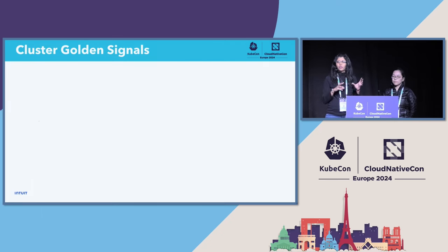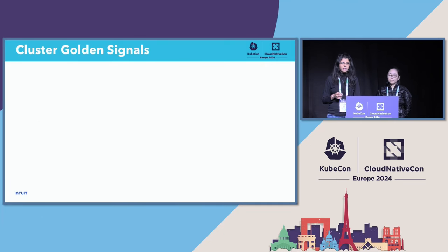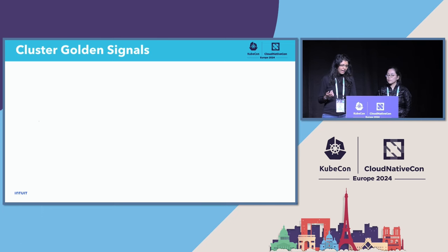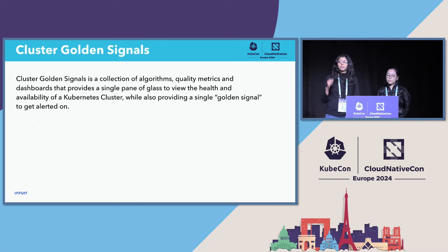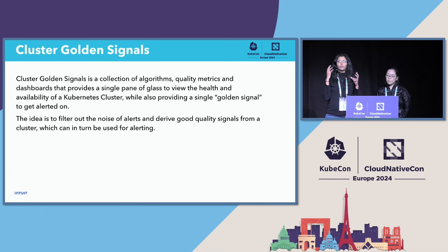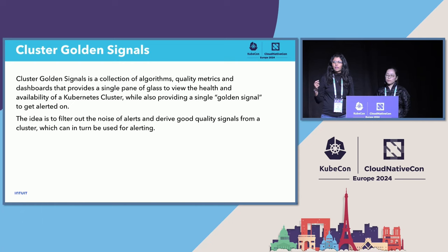In order to solve the first part of the problem and reduce alert fatigue from a sea of alerts, we've defined what are called Cluster Golden Signals. This is a philosophy derived from service golden signals, where you have four pillars across which you can measure the health of a service. Similarly, we measure it across four different pillars for the health of a cluster. These four pillars are error, saturation, latency, and traffic. We have a collection of algorithms, quality metrics, and dashboards to provide a single pane of glass to observe the health of a cluster.